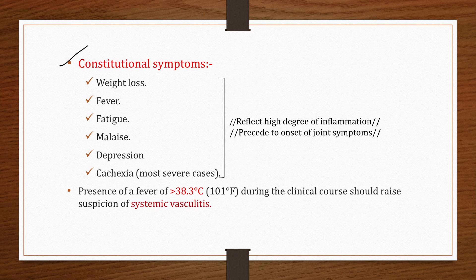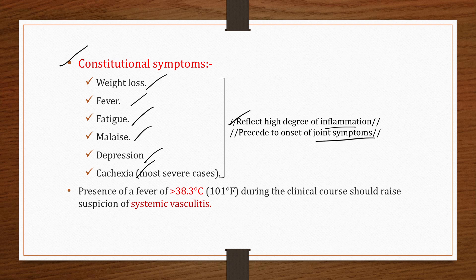Constitutional symptoms in RA are a group of symptoms affecting many systems, including weight loss, fever, fatigue, malaise, depression, and cachexia — that is, severe weakness and wasting of the body due to chronic illness. These symptoms reflect a high degree of inflammation and typically precede the onset of joint symptoms. Fever above 38.3°C during the clinical course should raise suspicion of systemic vasculitis.